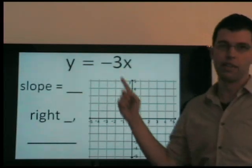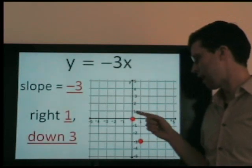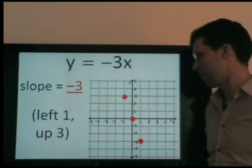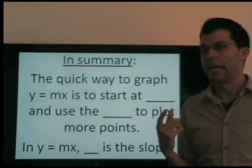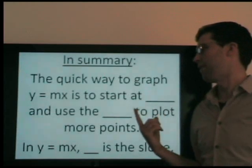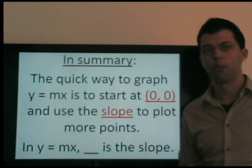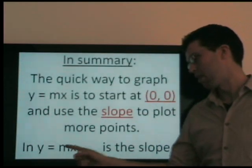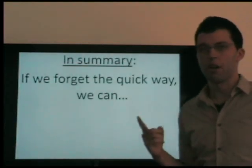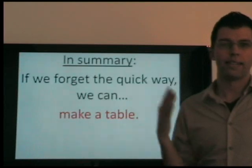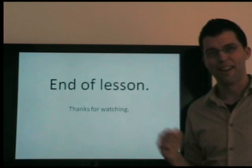For y equals negative 3x, the slope is negative 3, or negative 3 over 1 — right 1 and down 3, or left 1 and up 3. Connect and we're done. In summary, the quicker way to graph y equals mx is to start at (0, 0) and use the slope — whatever number is multiplying x — to plot more points. If you forget, you can always make a table. That's all. I hope that helped, thanks for watching.